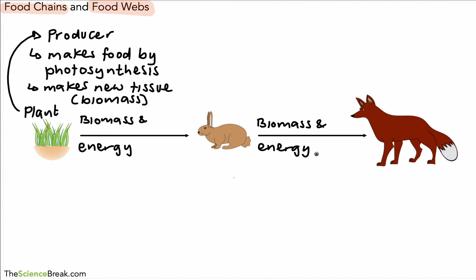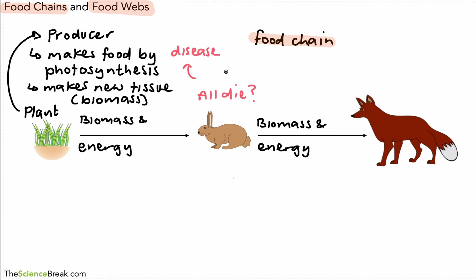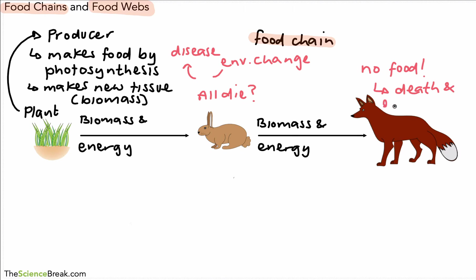So this is an example of a simple food chain. One issue with this particular food chain is: what happens if all the rabbits die for some reason? There could be reasons for that — for example, there's a disease that kills them all, or there could be some sort of change in the environment that could cause them all to die. What happens to the fox? Well, the fox would have no food, and therefore the foxes would all be gone too. That would result in the death of the foxes, and in extreme cases we could talk about extinction if it affected all the foxes of a particular species.